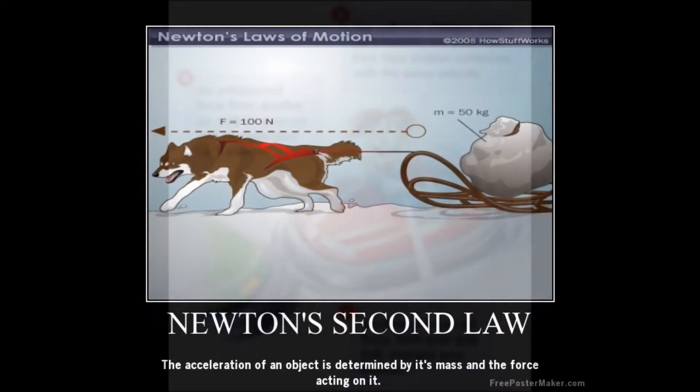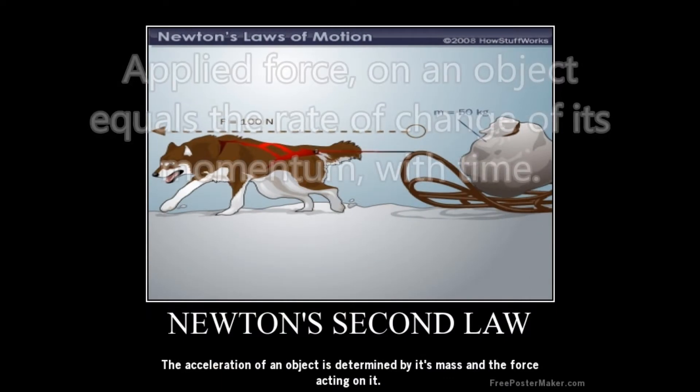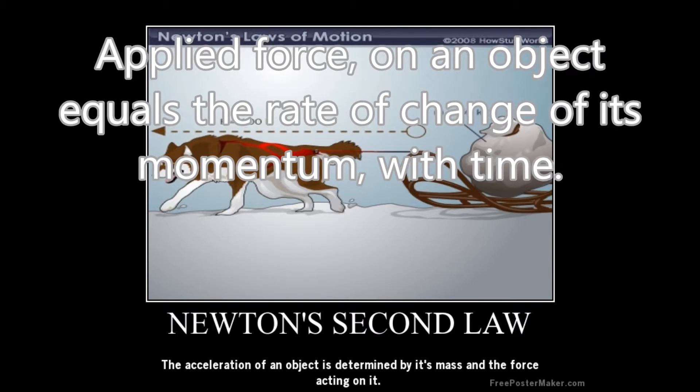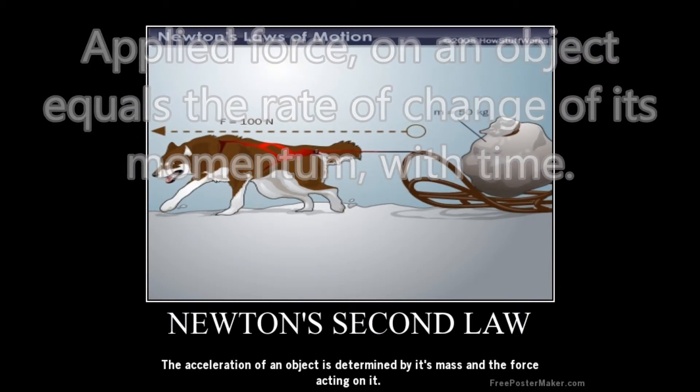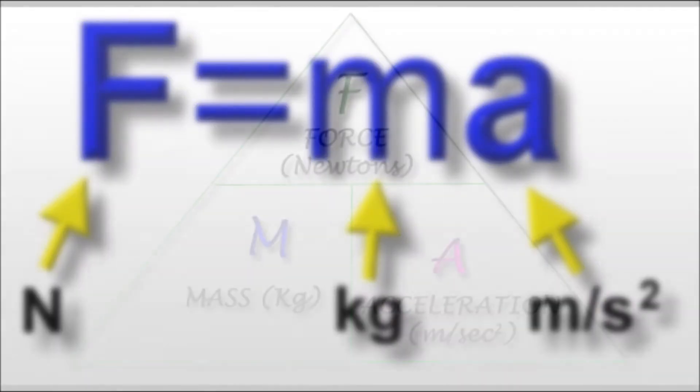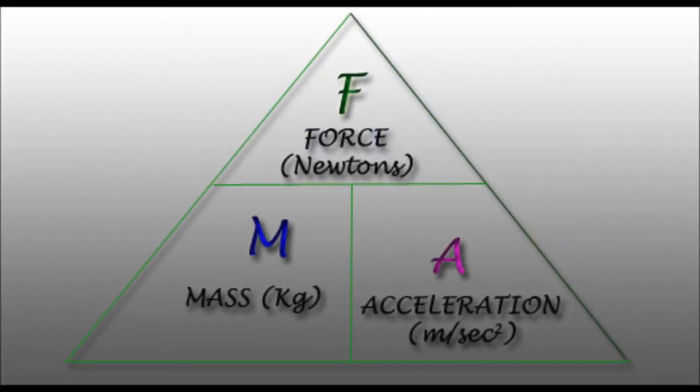The second law is: an applied force on an object equals the rate of change of its momentum with time, which in simple English means that force equals mass times acceleration, the equation we use to define force today. If you change one value of the triangle, the result changes.